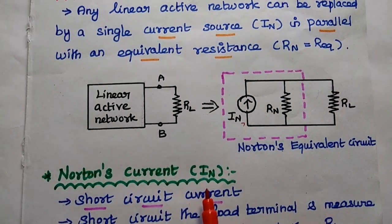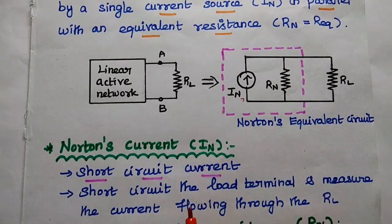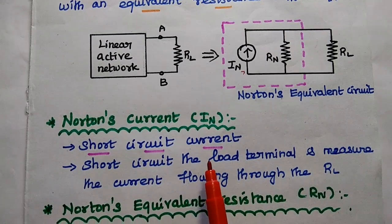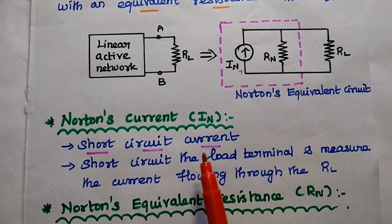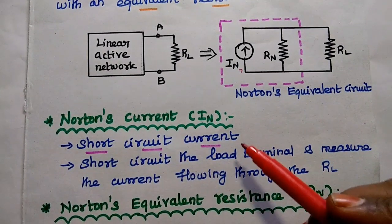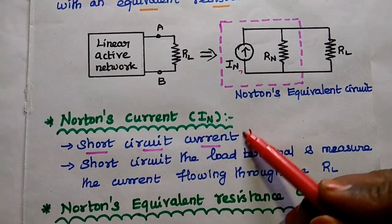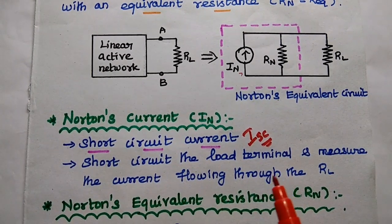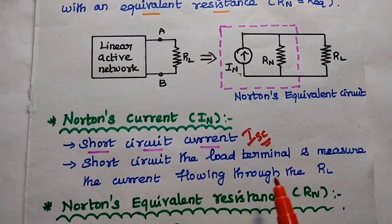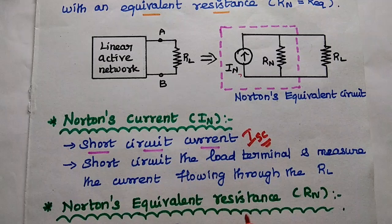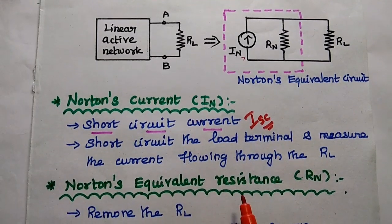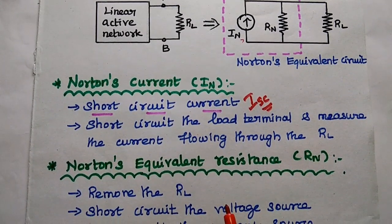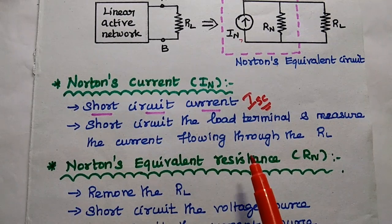What is meant by Natan's current? That is IN, and it is also called as short circuit current. Short circuit current means the load terminal is short circuited and then we measure the current flowing through that path. That is why it is called as short circuit current.